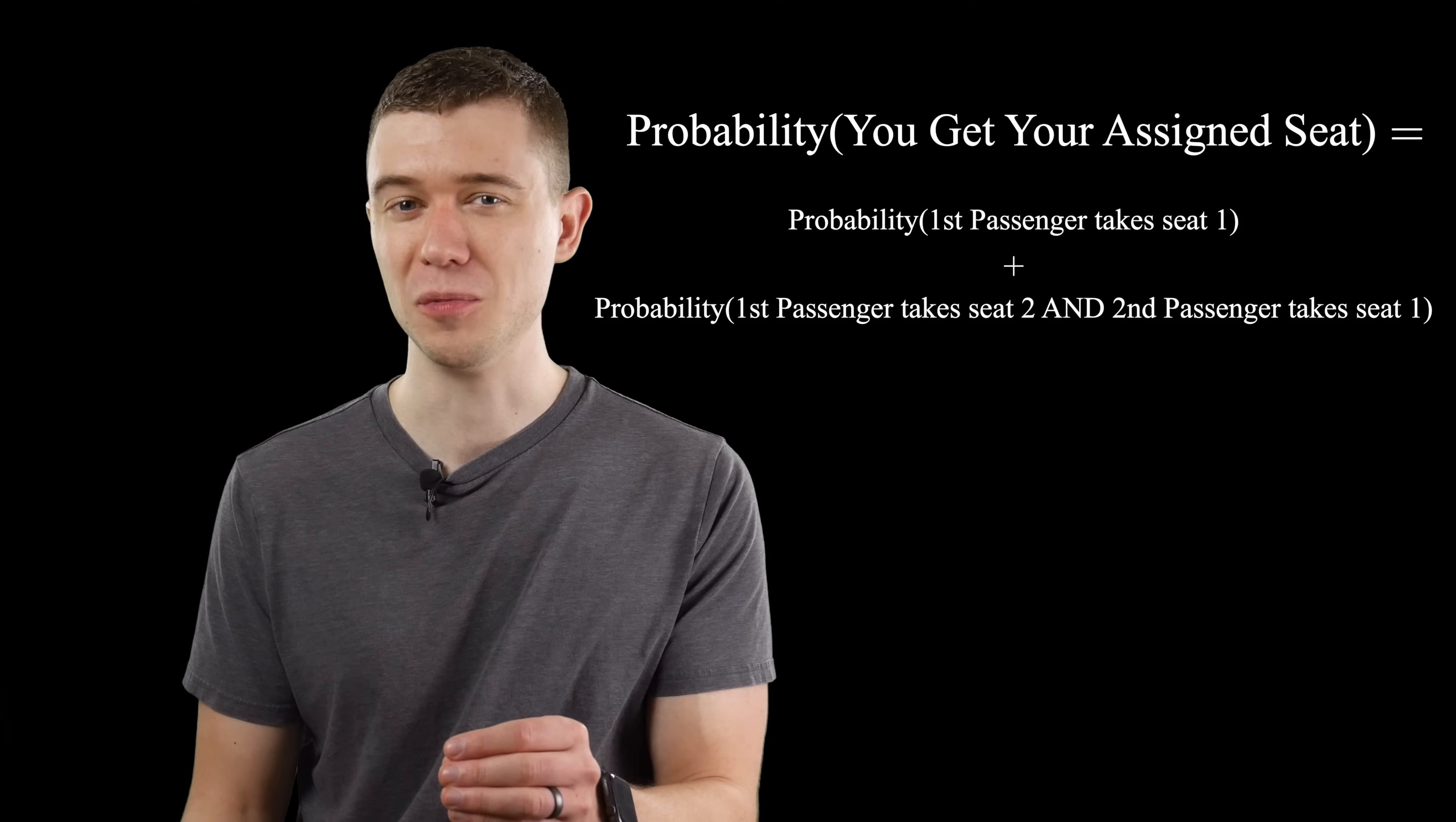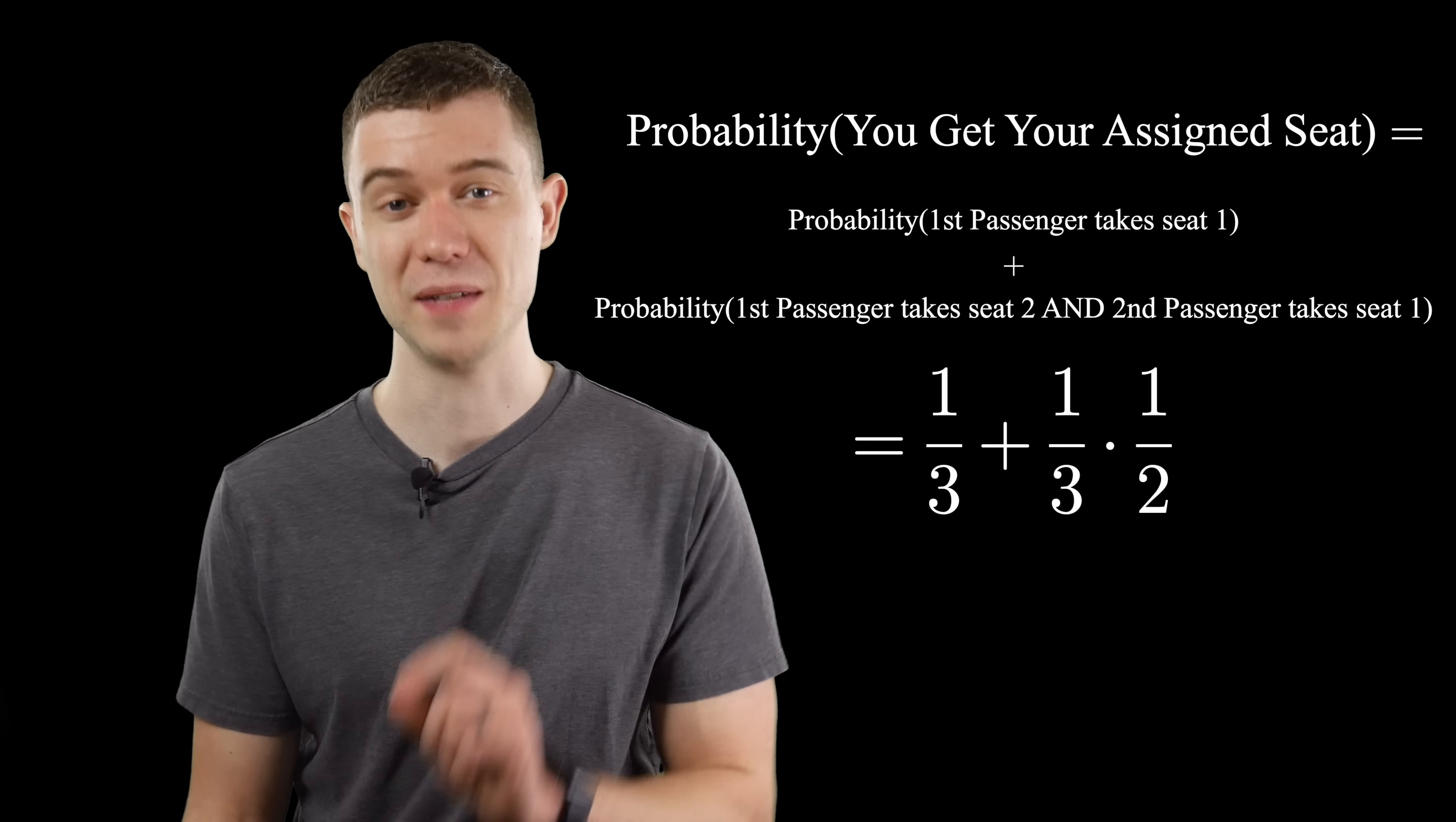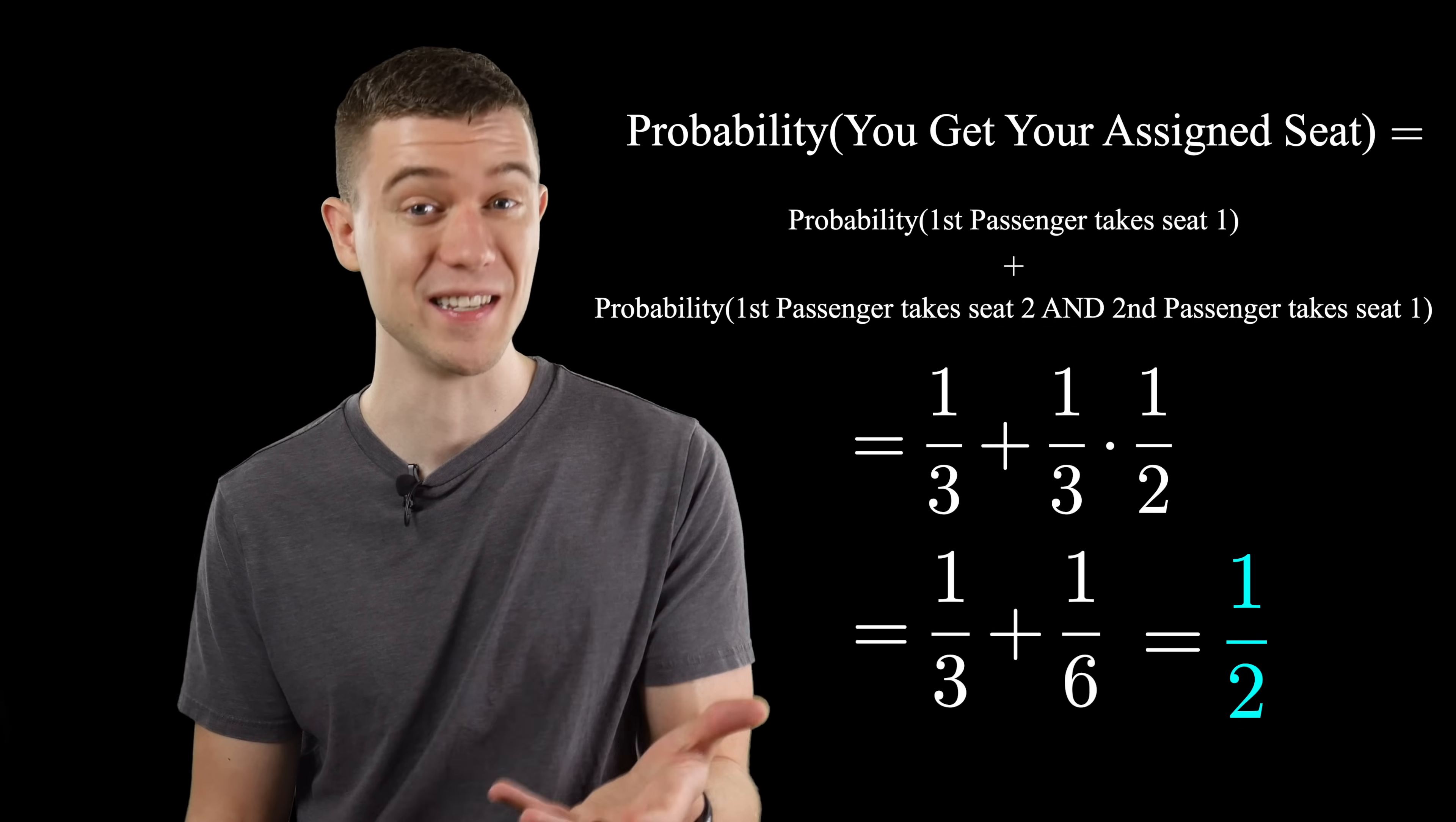We can compute these probabilities without too much trouble. For example, one-third of the time, the first passenger takes their seat, leaving you with yours. And one-sixth of the time, the second passenger ends up taking the first passenger's seat, leaving you with yours. One-third plus one-sixth is one-half, the answer in this case.